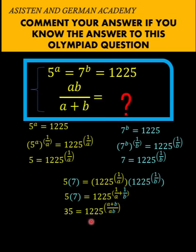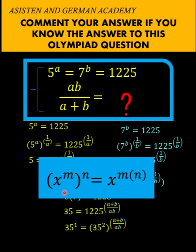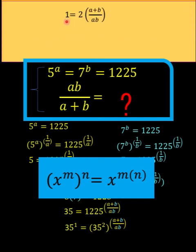Notice that 1225 can be expressed as a power of 35 — specifically, 1225 equals 35 squared. We copy the exponent, and 35 is the same as 35 raised to the first power. Recalling the power of power rule, we multiply exponents m and n. So we multiply 2 times the quantity a plus b over ab. Since the bases are the same on both sides, the exponents must be equal, giving us the equation: 1 equals 2 times a plus b over ab.